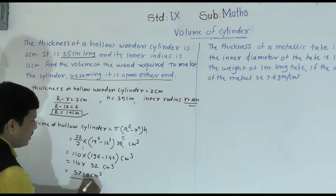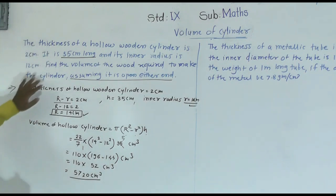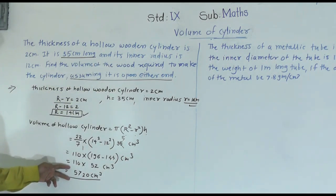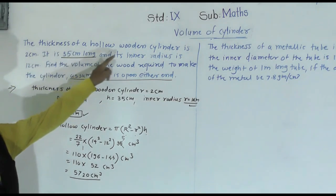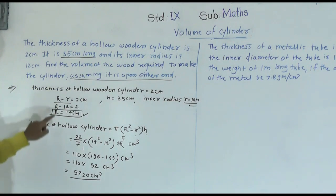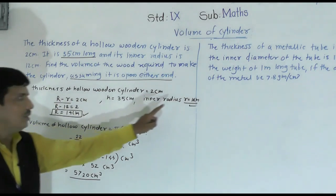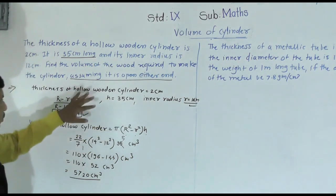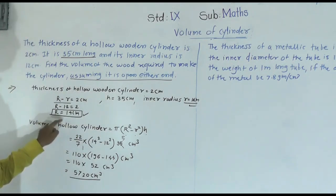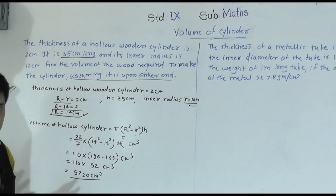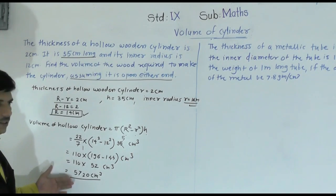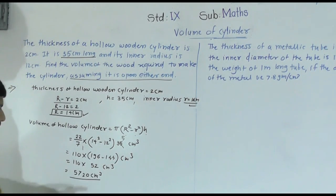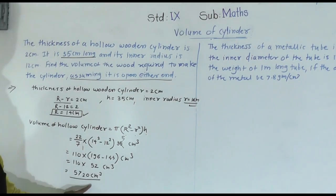So the volume of the wood is 5720 cubic centimeters — this is our final answer for the first problem. To summarize: thickness and inner radius were given; we used those to find the external radius, then substituted all values into the hollow cylinder volume formula to get 5720 cm³.